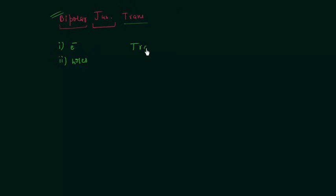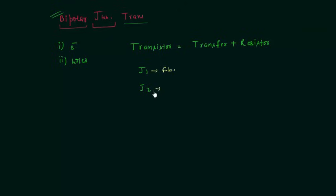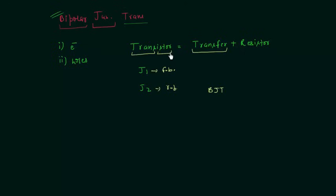The name 'transistor' is made of two words: 'transfer' and 'resistor.' We have two junctions J1 and J2. If junction J1 is forward biased it offers very low resistance; if junction J2 is reverse biased it offers high resistance. A weak signal is introduced at the low resistance and the output is taken from the high resistance — thus BJT transfers a signal from low to high resistance. The prefix 'trans' comes from 'transfer' and 'istor' is taken from 'resistor.' This is how we get the name transistor.